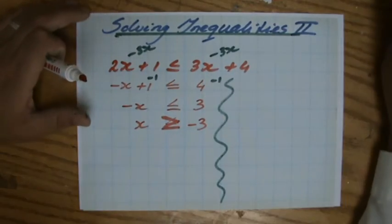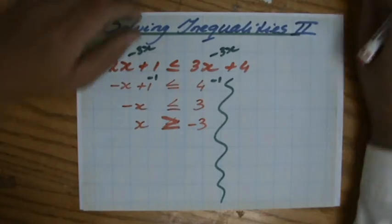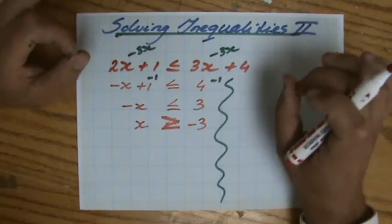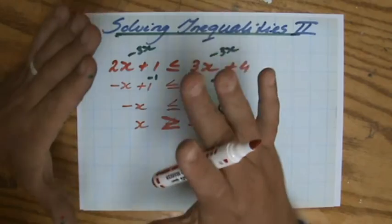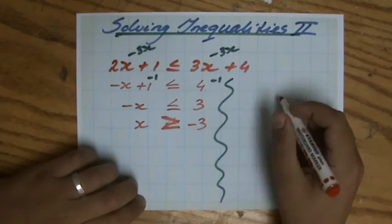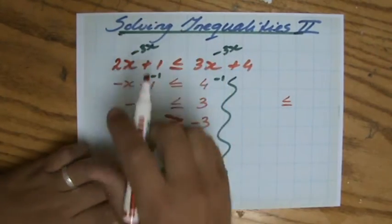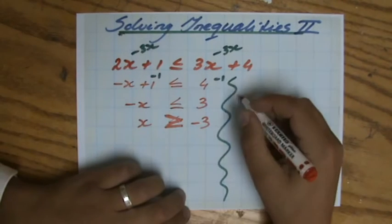Because I'm telling you, whenever you are solving inequalities, I strongly encourage you. Although you get the correct answer, but I strongly encourage you to always keep your terms with the x positive. What do I mean with that? Rather than taking away the 3x here, I'm going to take away the 2x there. So let me just rewrite the equation.